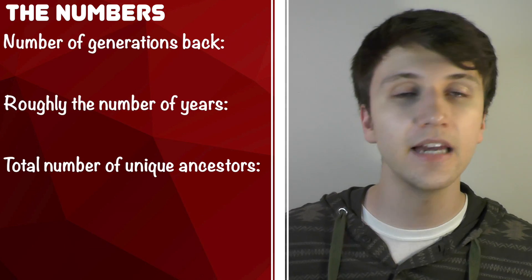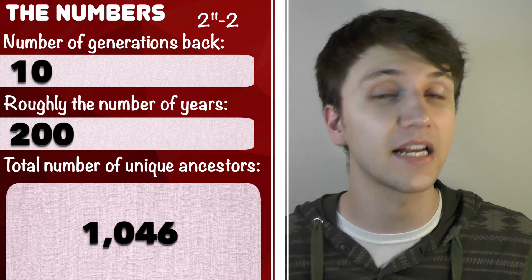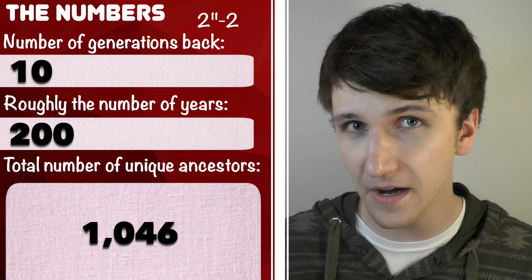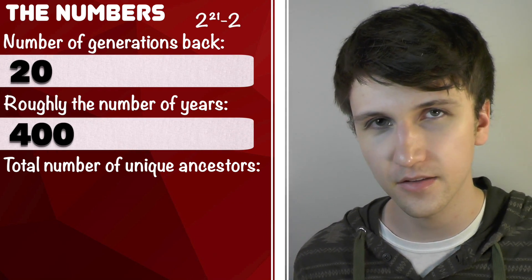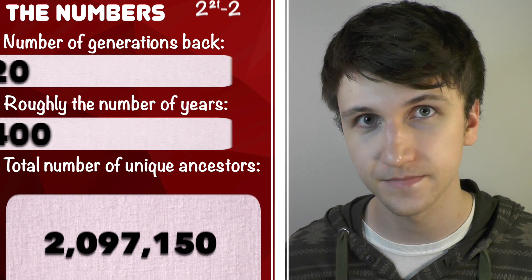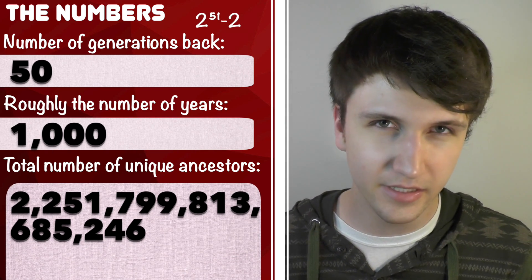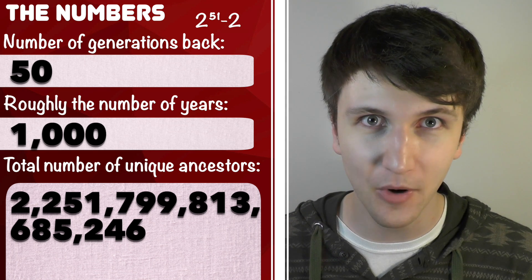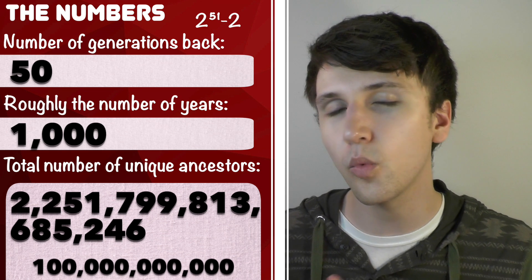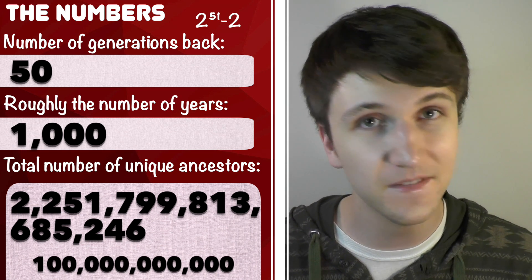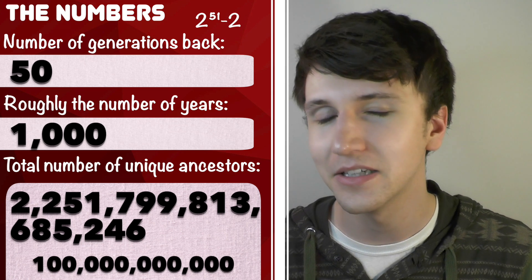So let's look at those numbers. Ten generations back from you, which would be about 200 years worth of ancestors, would give you 1,046 unique individuals — that's everybody added up together. It's a rather respectable number, but these numbers do get a bit ridiculous. Twenty generations back from you, which would be about 400 years worth of ancestors, would give you over 2 million unique individuals. Fifty generations back from you, which would be about 1,000 years worth of ancestors, would give you over 2 quadrillion individual people. We have a problem — that's more people than are estimated to have actually ever been born. Including all the people alive today, there have been an estimated 100 billion people born within the last 50,000 years, and our number far exceeds the population of the time as well.